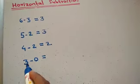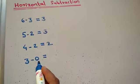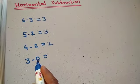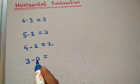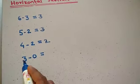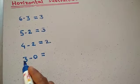Now, 3 minus 0. Remember: if 0 is subtracted from any number, the answer is the number itself.